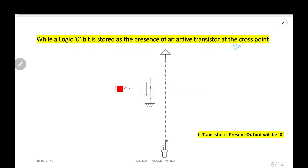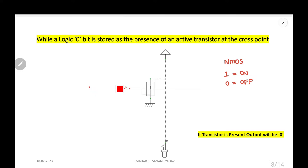Logic 0 bit is stored as the presence of an active transistor at the cross point. Consider the same cross point: R is for row, C is for column. At this cross point, an active NMOS transistor is present. For NMOS, if input is 1 it will be in ON state; if 0, it will be in OFF state. Here red indicates logic high, so if we give logic 1 this NMOS will be ON, connecting via this point to ground, which is logic 0. So that particular output LED is in OFF state, meaning output is logic 0.